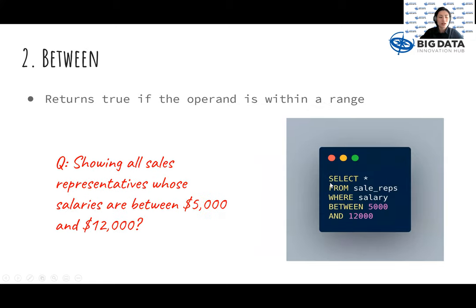Second, the use of BETWEEN returns true if the operand is within a range. Here we want to see all sales representatives whose salaries are between $5,000 and $12,000.